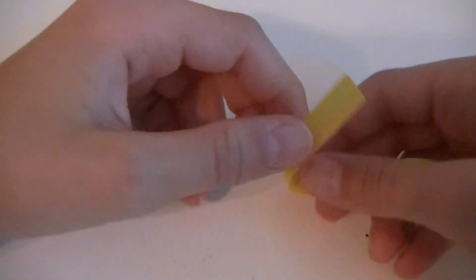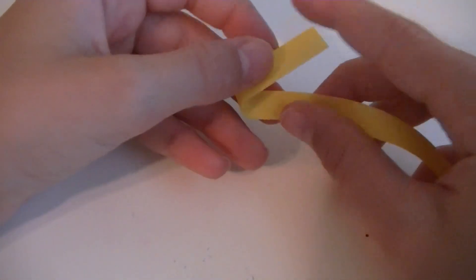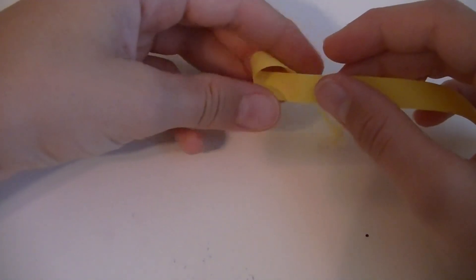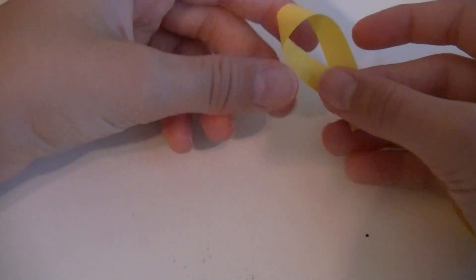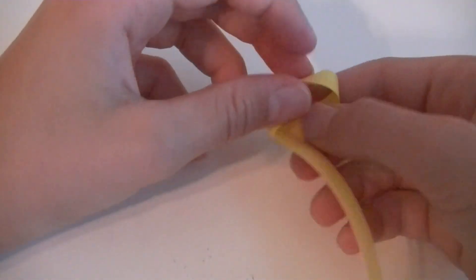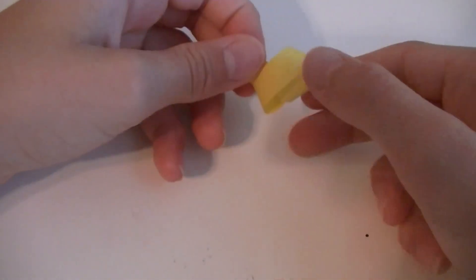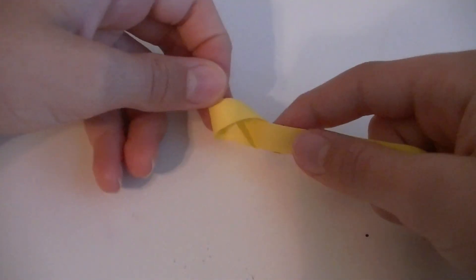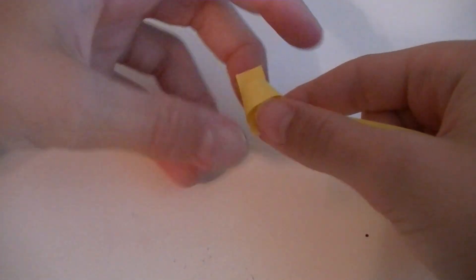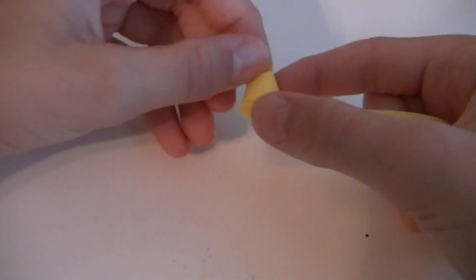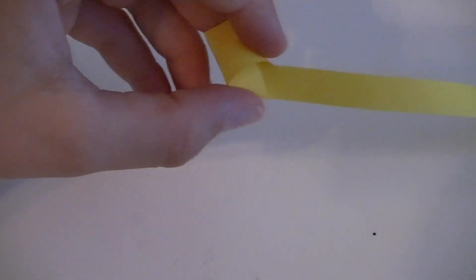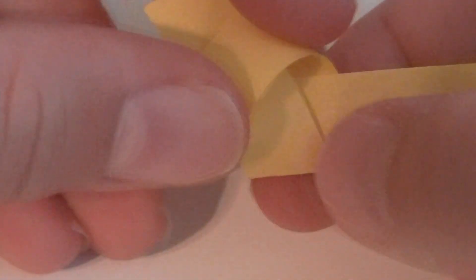Turn the paper there and then put it through there, and then you can pull the knot and have it like inside here.